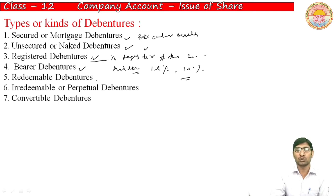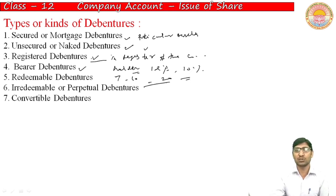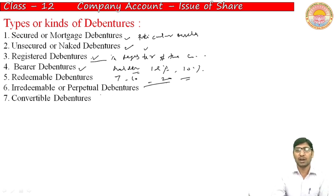The next type is redeemable debenture. Redeemable debentures are those which can be redeemed after expiry of a fixed period of time — meaning repayment is made after the period ends. As discussed, if a debenture is issued for 7 to 10 years or 20 years, the principal sum is returned to the debenture holder at the end of that maturity period, freeing the company from its fixed financial charge liability.